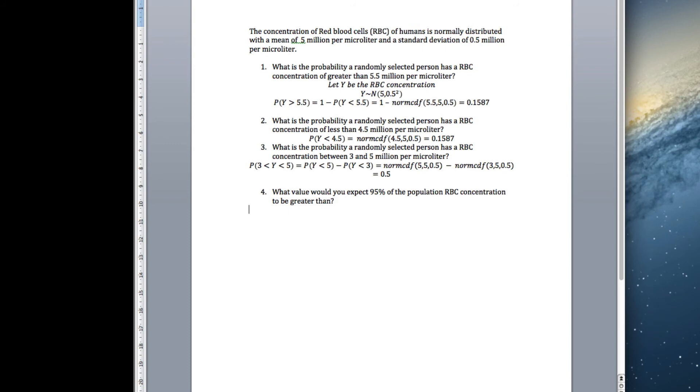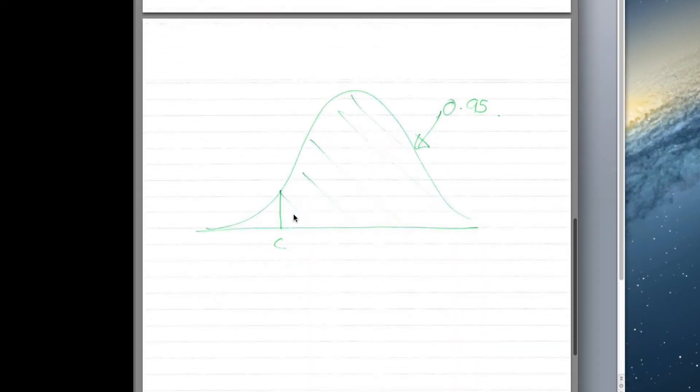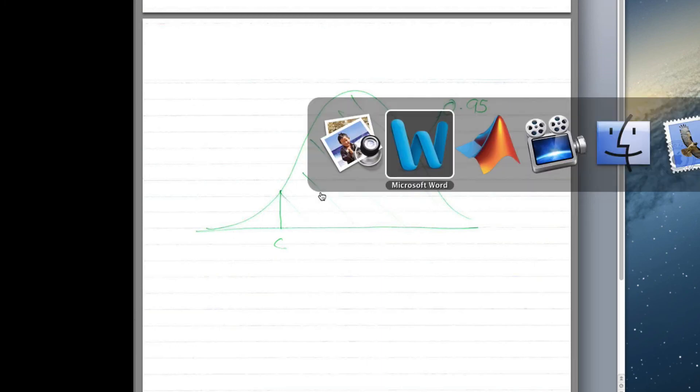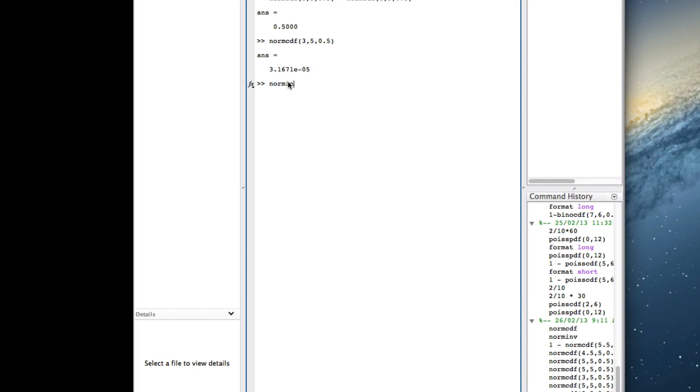The final bit. We want to find a value C, or some value, that you'd expect 95% of the population to be greater than. So we want to find the probability Y is greater than some value C equals 0.95. What's the value C going to be? If we look at our diagram, what we're looking at here is we've got some value C here, essentially the area to the right of it is 0.95. There's a command in MATLAB called norm inverse. But the thing is, norm inverse will only give you the area. Again, you have to give the area to the left and it will give you C. Well, the area to the right of C is 0.95. The area to the left of C must be 0.05.